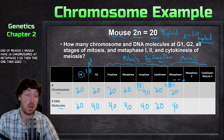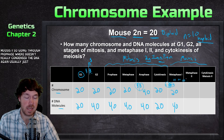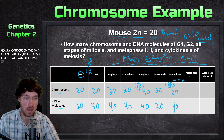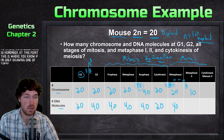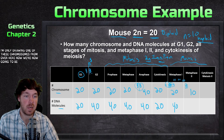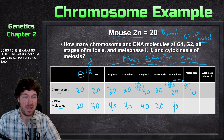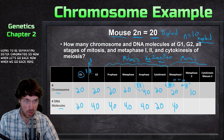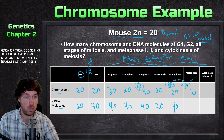At metaphase two we have 10 chromosomes. Now, at this point we're going to be separating sister chromatids. The cohesions break and pull them to each side — when they separate at anaphase two, because this chromosome separates, we actually jump back up to 20 chromosomes.